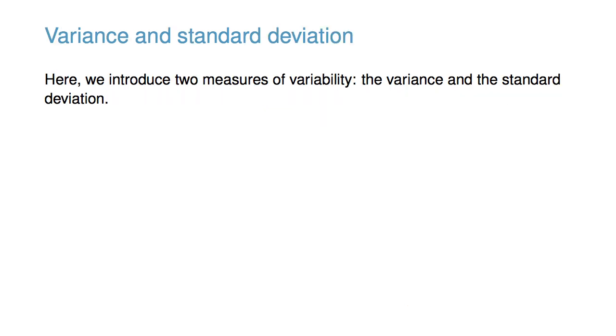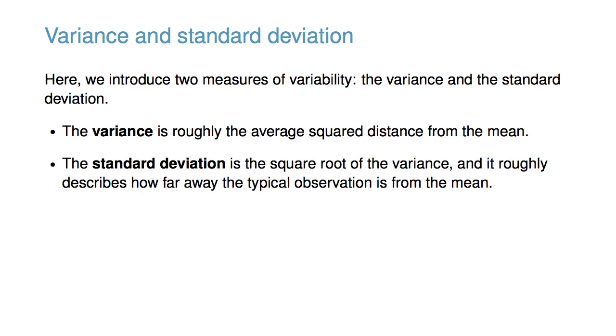Here, we introduce two measures of variability: the variance and the standard deviation. The variance is roughly the average squared distance from the mean. On the other hand, the standard deviation is the square root of the variance, and it roughly describes how far away the typical observation is from the mean.